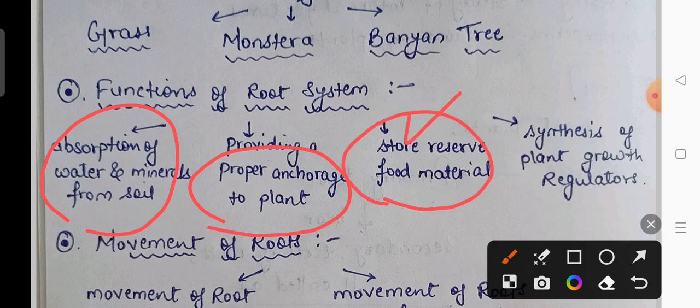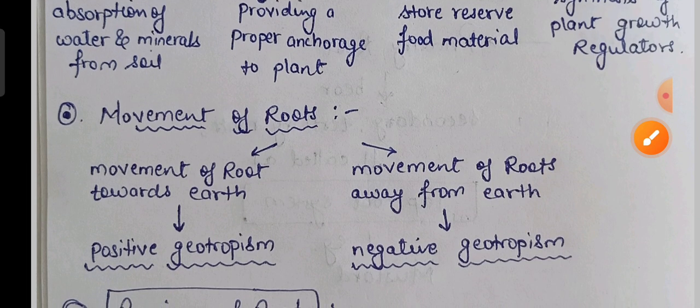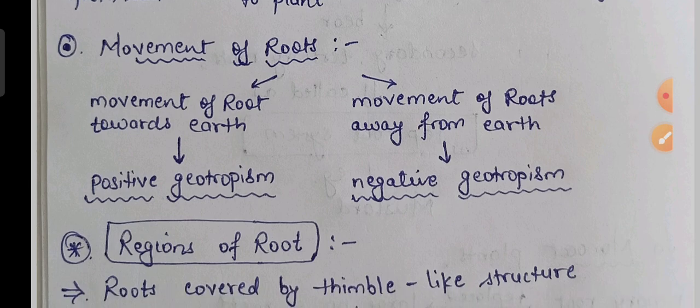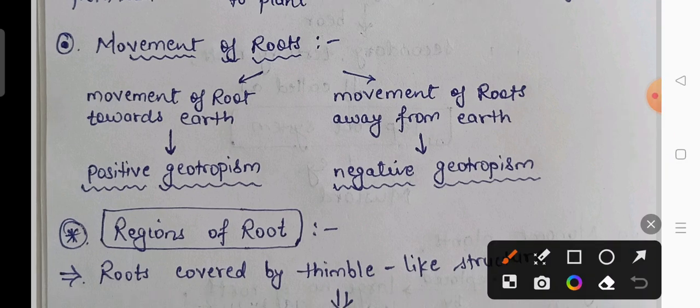Roots also synthesize plant growth hormones and plant growth regulators. Regarding movement of roots — roots can either move towards the earth or away from it. Normally, roots move towards the earth, which is called positive geotropism.